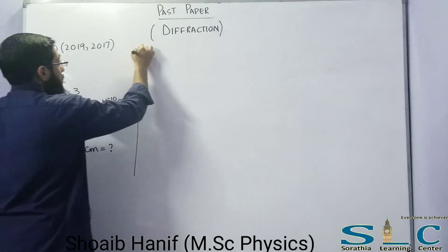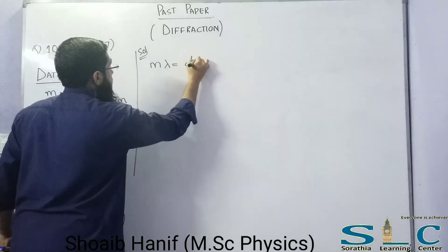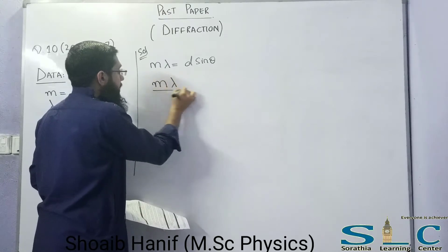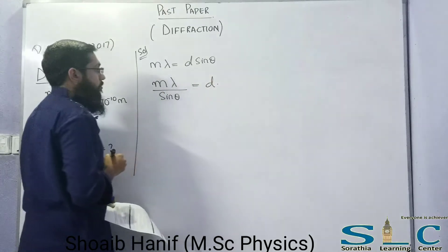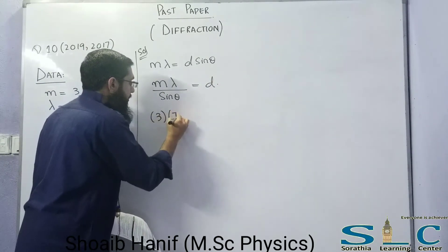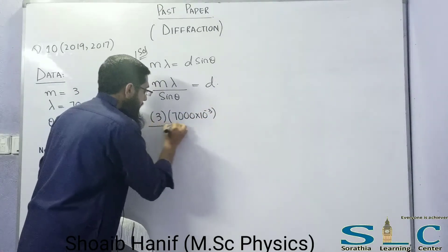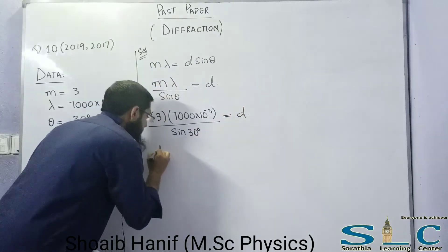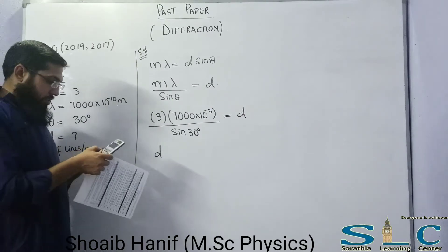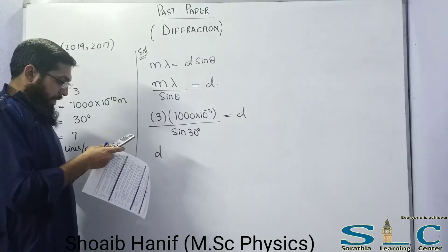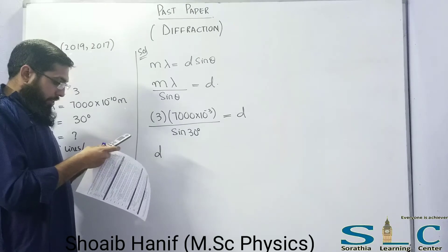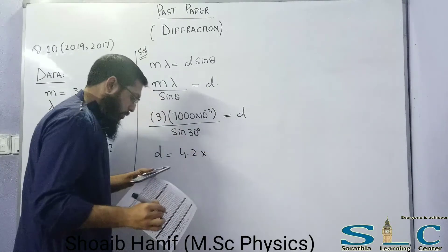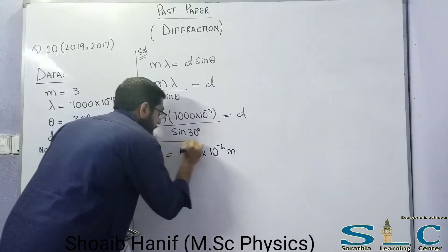Using the diffraction formula m·λ = D·sinθ, rearranging: D = m·λ / sinθ. Substituting: D = (3 × 7000×10⁻¹⁰) / sin30°. Solving this gives D = 4.2×10⁻⁶ meter. This is the grating element.